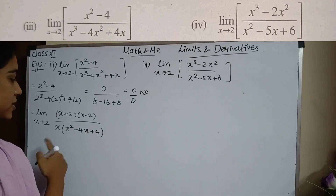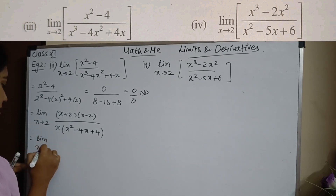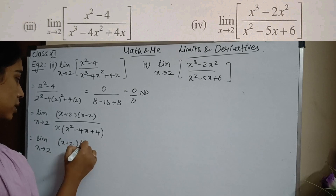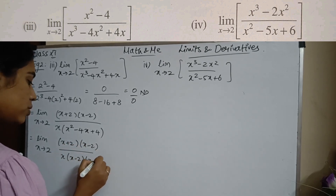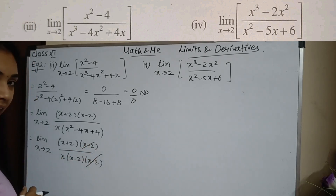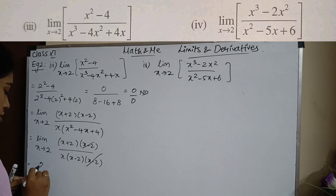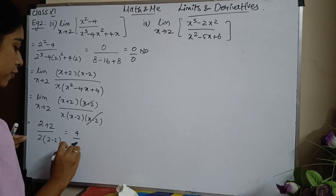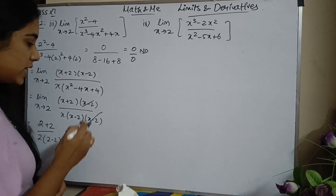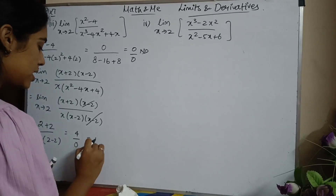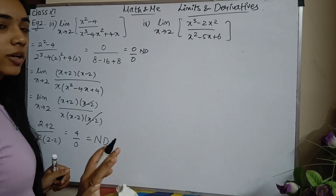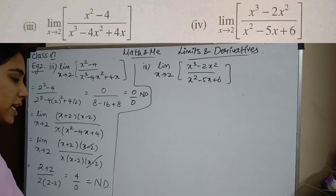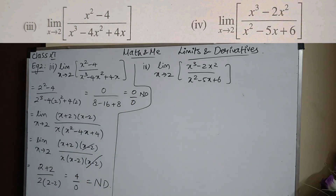The denominator factors as x(x-2)(x-2). So the expression becomes (x+2)(x-2) divided by x(x-2)(x-2). Cancelling both (x-2) terms, then substituting x = 2 gives (2+2) / (2 × (2-2)) = 4 / 0. The denominator is still 0, so this limit is not defined.